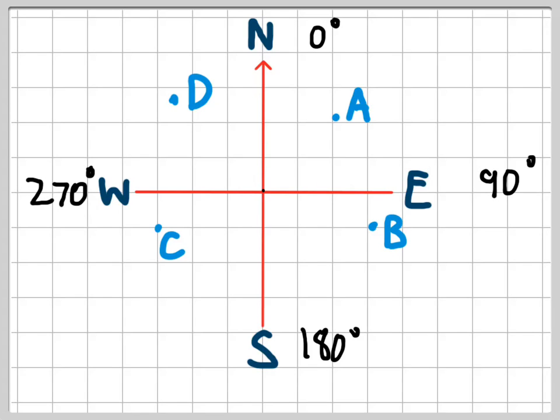So we'll look at a few examples here. If I was to move from the center up until point A, I'm walking in a direction somewhere between 0 and 90, and I'm about halfway between there. So I could estimate that the bearing of A is around 45 degrees.